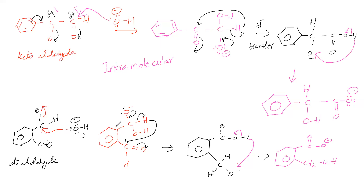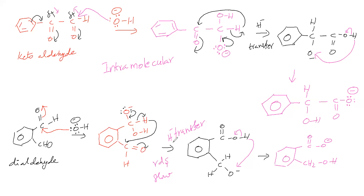In this intramolecular Cannizzaro reaction, which step is the rate-determining (slowest) step? The H⁻ transfer (hydride shift) is the slowest step. Why? Because a sigma bond must break completely and H has to take that sigma bond towards itself. In nucleophilic attack or acid-base neutralization the mechanism is different, but here H has to break the sigma bond completely — even though H has low electronegativity compared to carbon, it takes the bond as H⁻. Therefore this hydride shift is the slowest, rate-determining step.